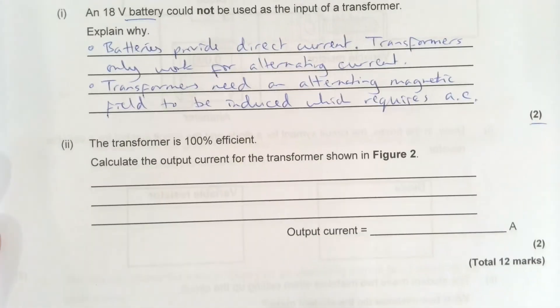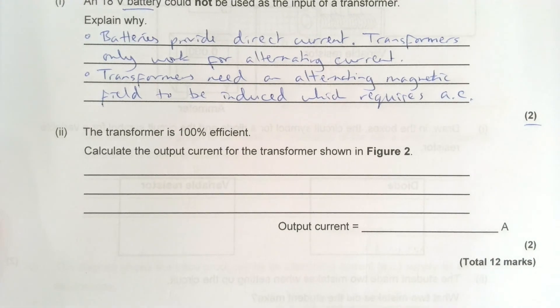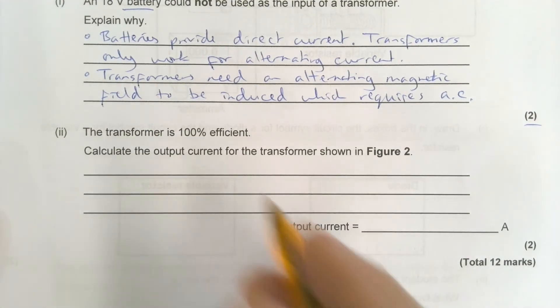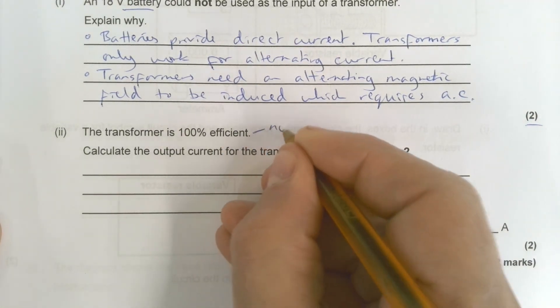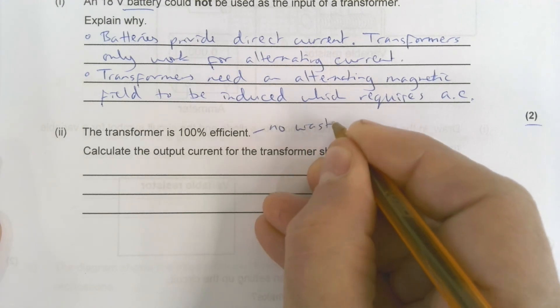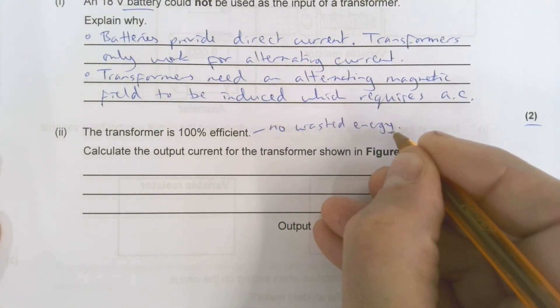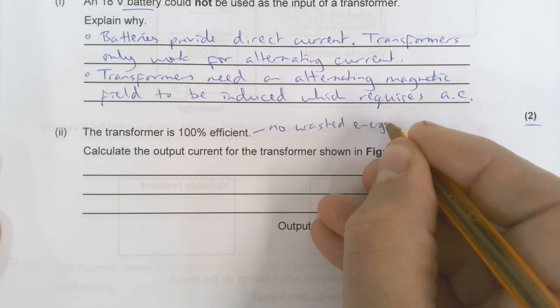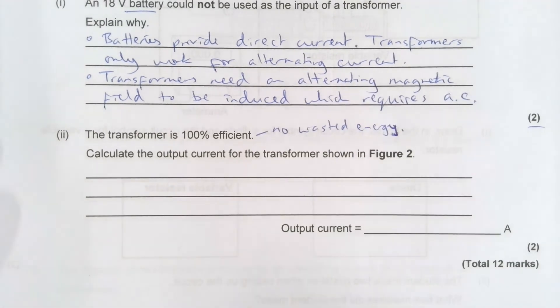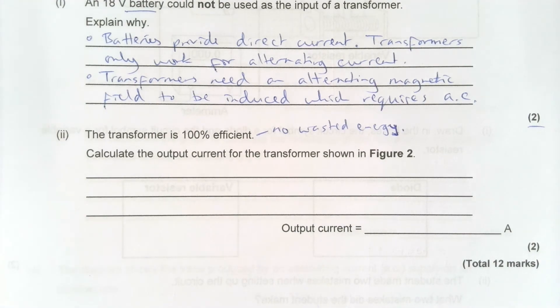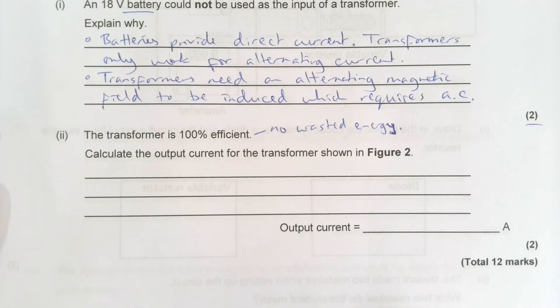The transformer is 100% efficient. Calculate the output current for the transformer shown in figure 2. 100% efficient means no wasted energy at all. Okay. Doesn't mean it's good at its job. It just means it doesn't give an idea about effectiveness. It just tells me it doesn't waste any energy.